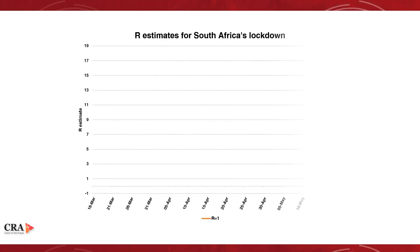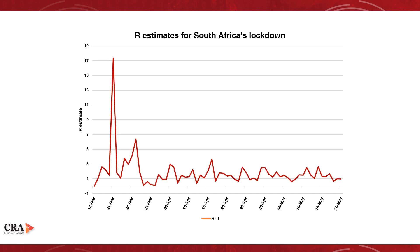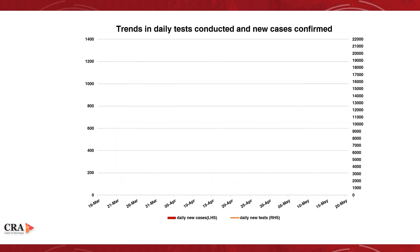Here, we see that taken on a day-to-day basis, the line graph changes value drastically, in an inconsistent manner. To understand why this is, we need to look at the number of tests conducted daily.